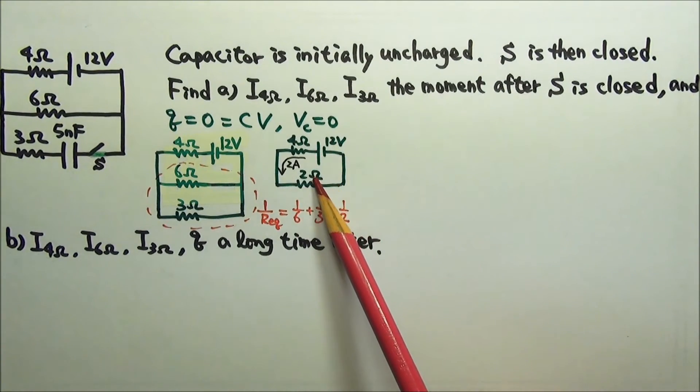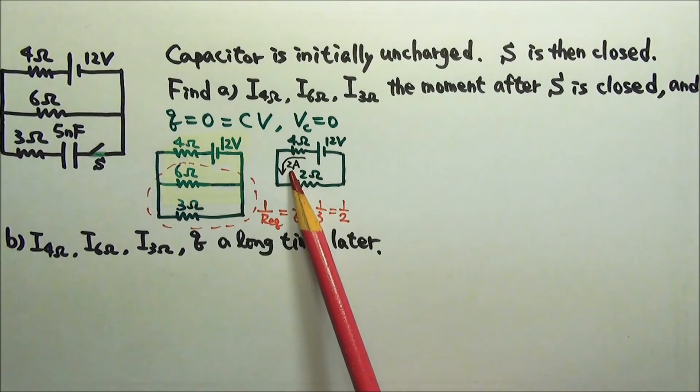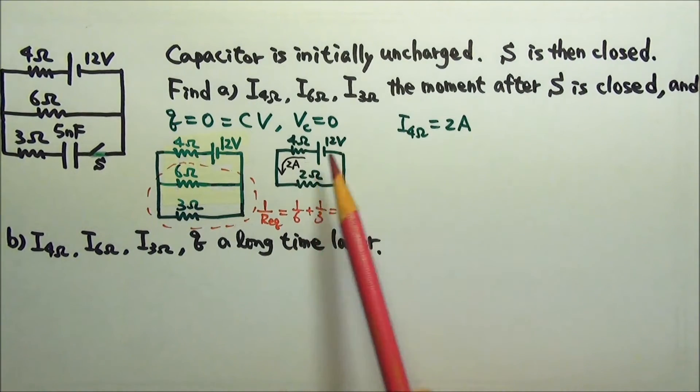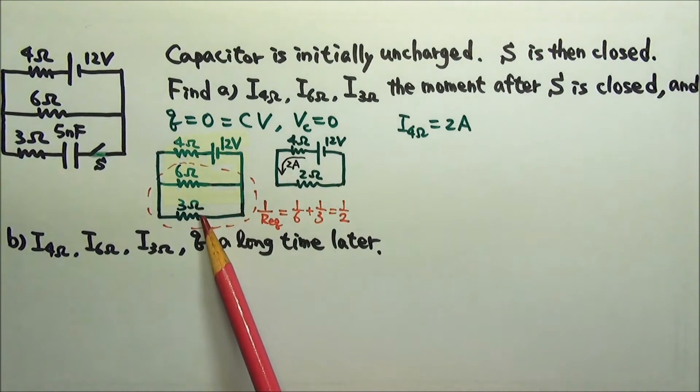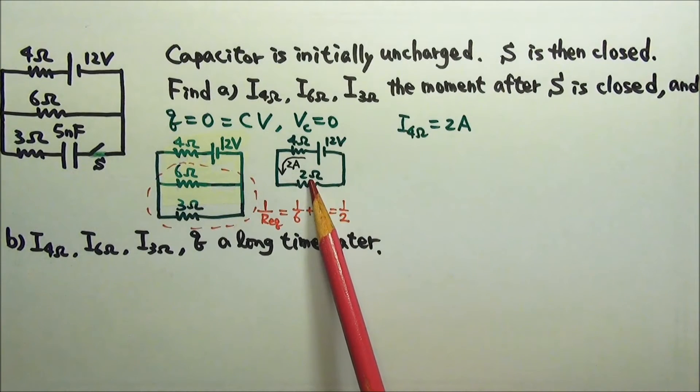12 volts, 6 ohms, so the current is 2 amps. So the 4 ohms gets 2 amps. The 2 ohms also gets 2 amps, but this one is really these two in parallel. When they are in parallel, they get the same voltage. They don't get the same current.